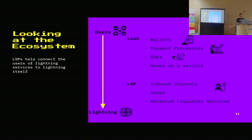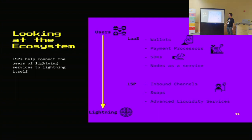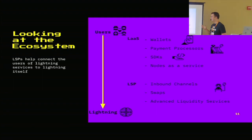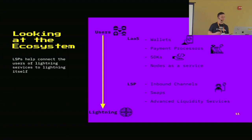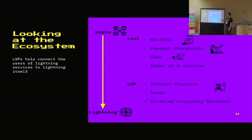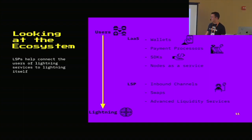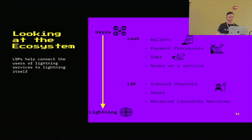Looking at the ecosystem, it's a nice scale from users all the way to Lightning. Lightning-as-a-Service provides things that face users and make it easy to get onto Lightning — wallets, payment processors, SDKs, even nodes as infrastructure. After a user gets on one of these services, they always need to get liquidity, and that's where LSPs come in. LSPs deal with channels, swaps, advanced liquidity services. I see Lightning-as-a-Service as the top layer facing users, and LSPs closer to Lightning, helping connect users directly.